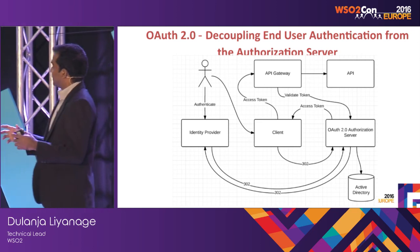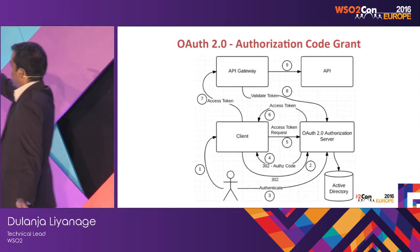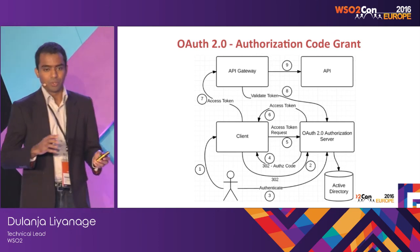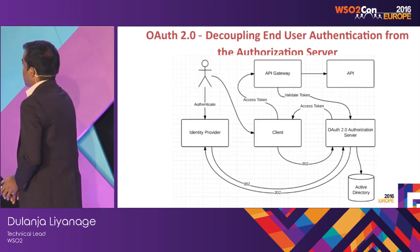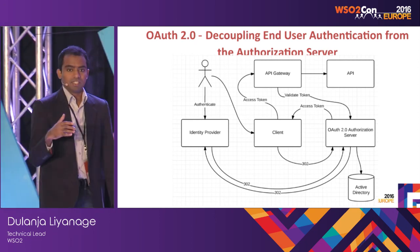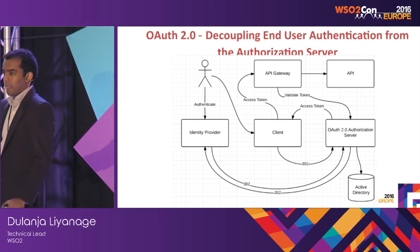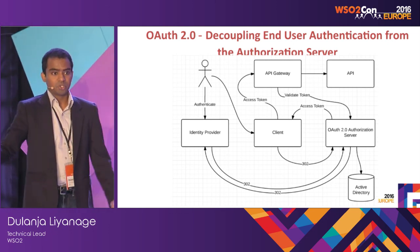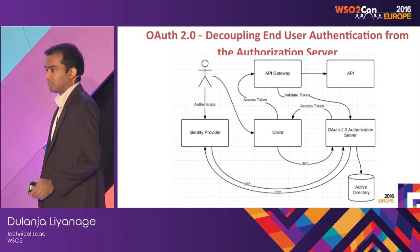Using OAuth 2.0, there are very interesting use cases we can build. Usually the authorization server and the resource server are one — authorization is done at the server where the APIs are hosted. But consider a different scenario where the user is coming from Google — the user account is at Google. We need to decouple the user authentication from the authorization server, because the authorization server doesn't know about this user — the user is from Google, not from the authorization server's user store.